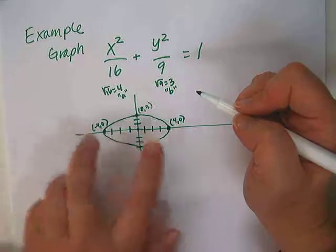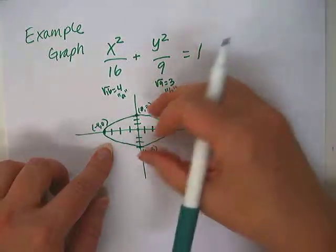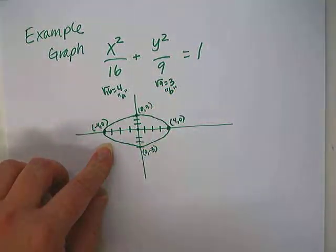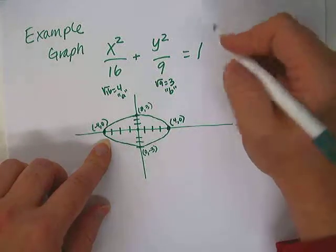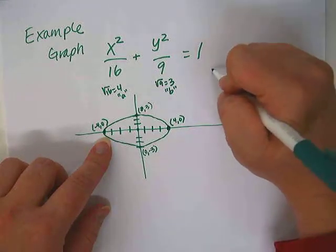But we don't have a name for those. They're not called vertices. They're just the other points that help us graph it on the ends of the minor axis. Let's just write down all the details we have here.